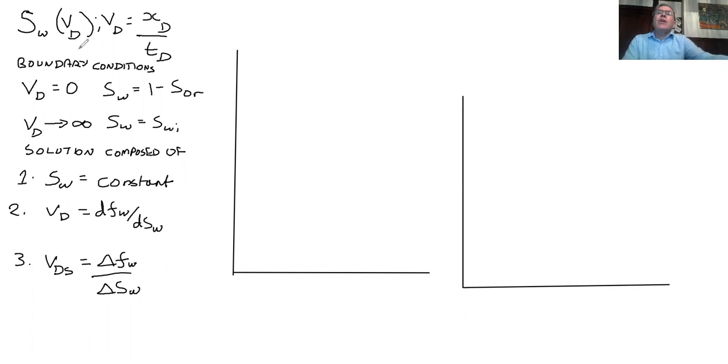So now the boundary conditions are at the injection well. So this is xd equals zero, so vd equals zero. The water saturation is its maximum. That's where we're putting in the water. So it's not one, it's one minus sor because there's a residual saturation. Then at td equals zero, which actually means vd tending to infinity, so along way from the injection well, we have the initial water saturation.